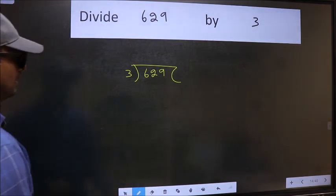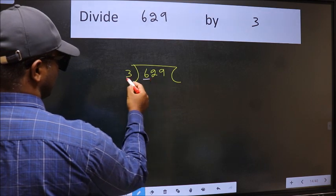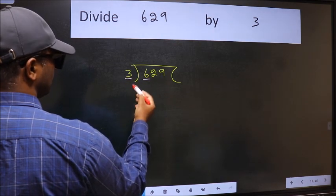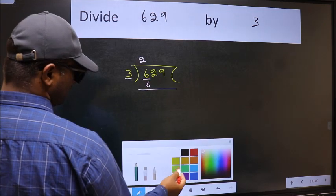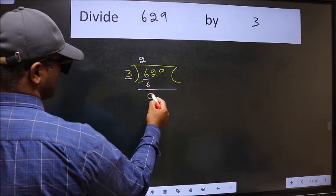Next. Here we have 6 and here 3. When do we get 6 in 3 table? 3 2's 6. Now we should subtract. We get 0.